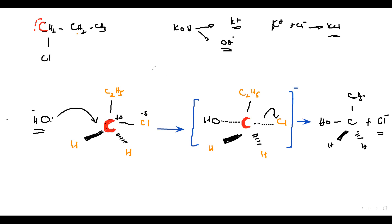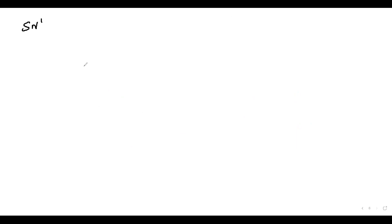This is an SN2 reaction — the reaction rate depends on two molecules. The nucleophilic substitution reaction with KOH can also react with a tertiary halogenoalkane, in which case it will be an SN1 reaction.